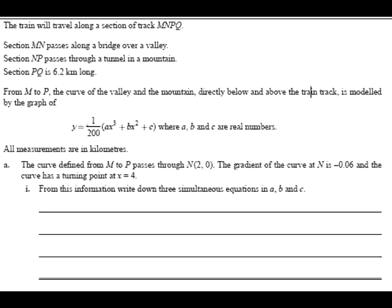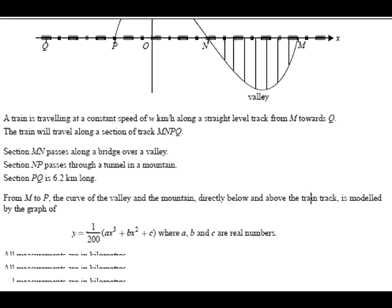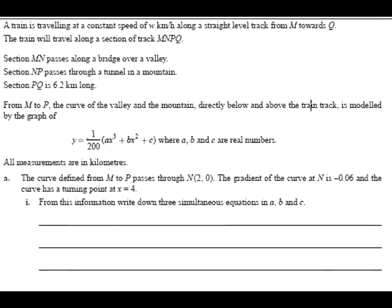Now, look at the information that they've given us. Firstly, we know it's a cubic, a positive cubic because of the shape. Secondly, we see that it's got a form, right? y equals 1 on 200, ax cubed plus bx squared plus c. And look at the conditions. The curve goes through some point, you get a gradient, and also you get told a turning point.